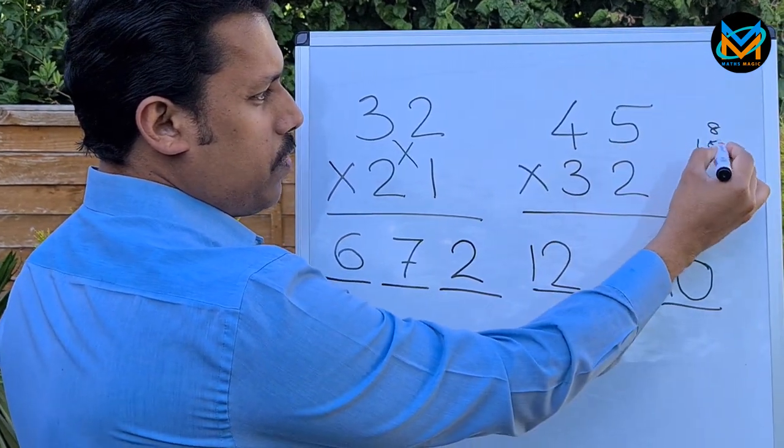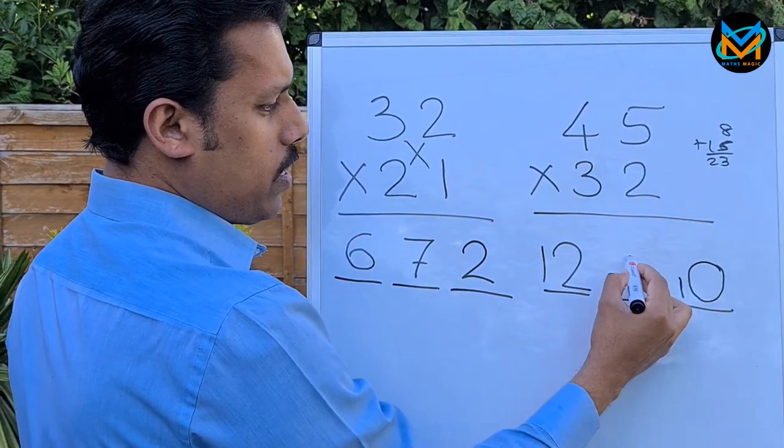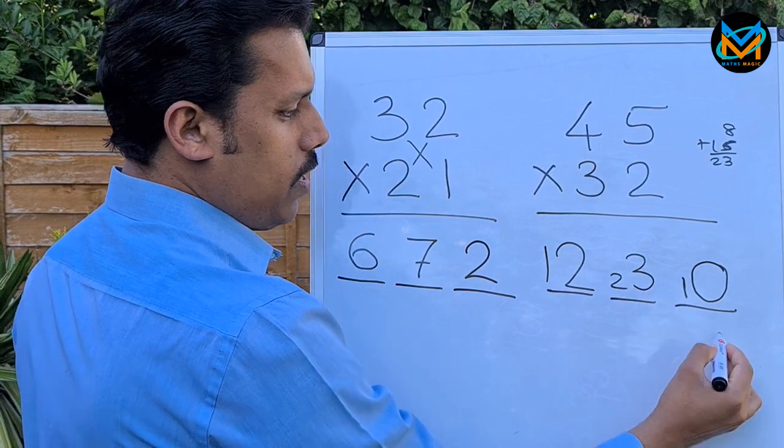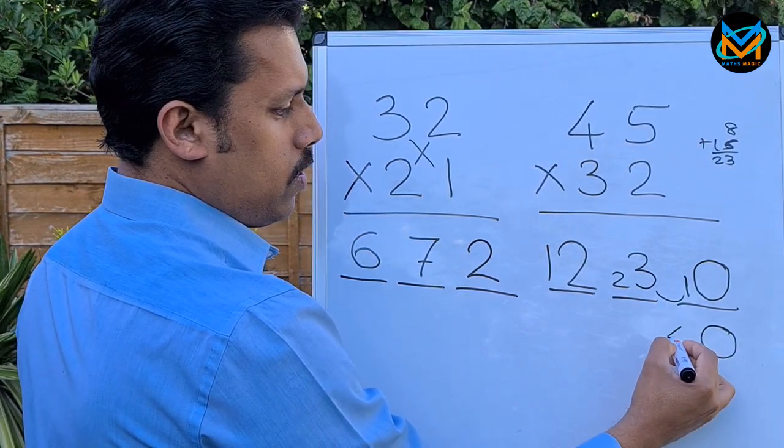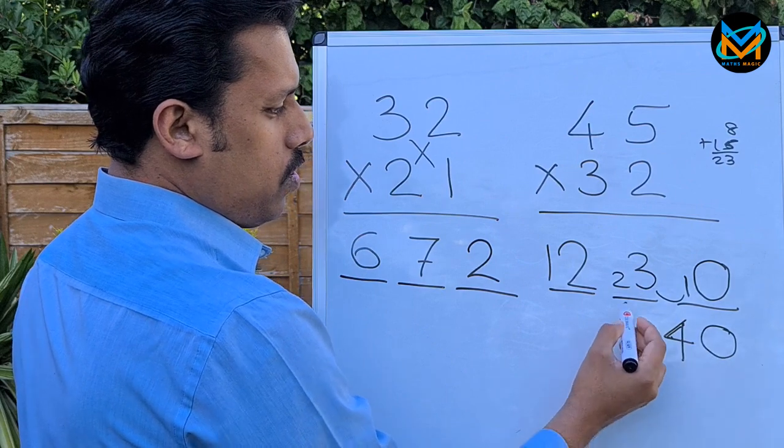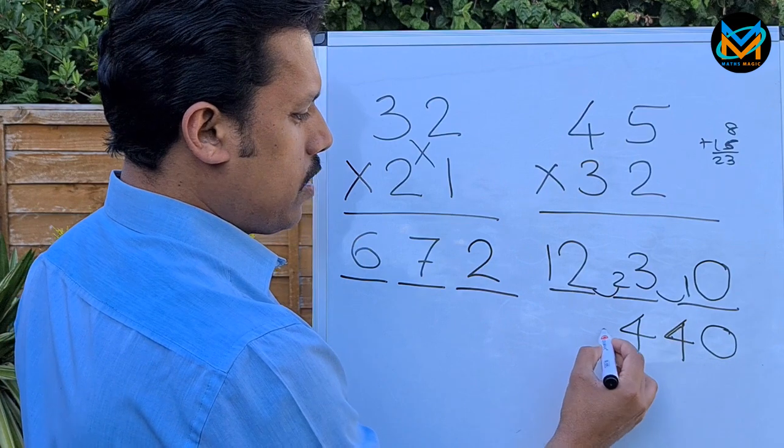When you add them, you get 23. Your final answer: add these two to get 4, add these two to get 4 again, and the one, giving you 1440.